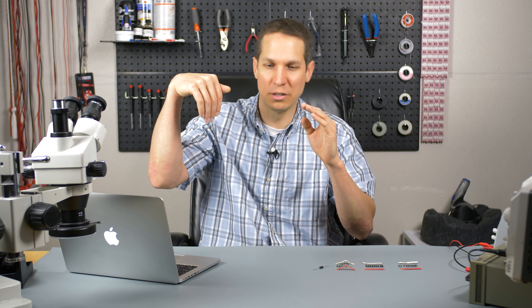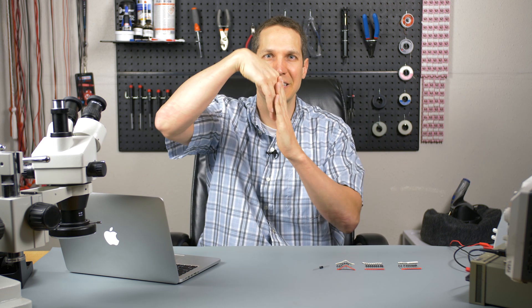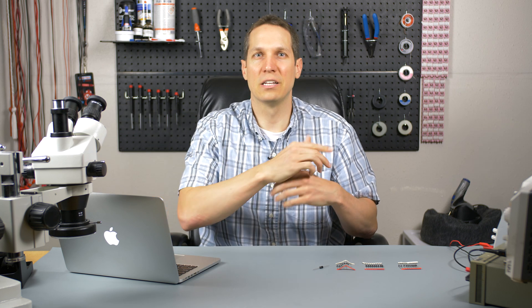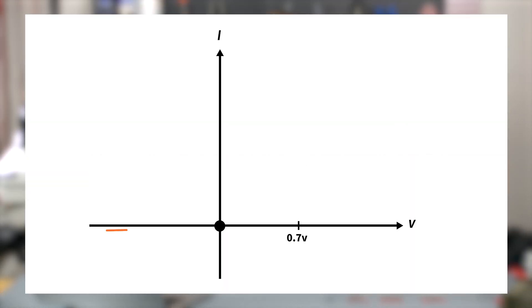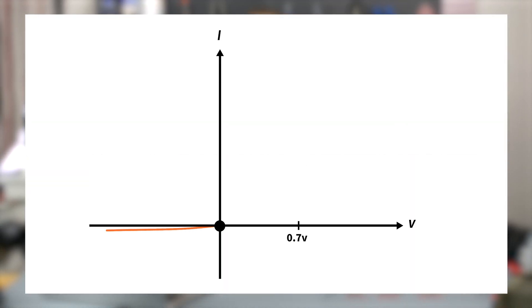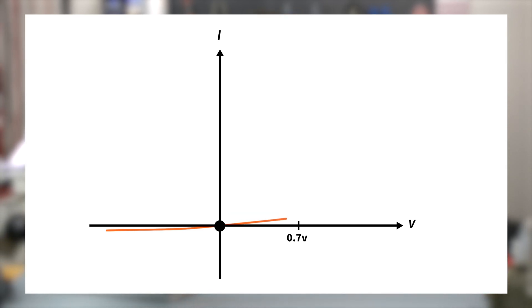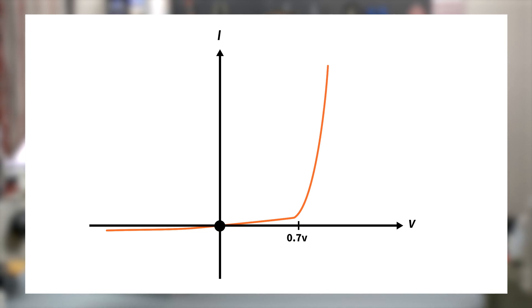Now the reality is, it doesn't quite work like that. When you do have a reverse voltage, there's a little bit of leakage current — kind of like that flapper probably having some water leaking out through the sides. Also, if you have enough force pushing backwards, that flapper will break and you'll actually get a huge rush of current in the negative direction. There's also a little bit of pressure that needs to be overcome before it can conduct in the forward direction — just as that flapper needs a little bit of pressure to push it up and out of the way.